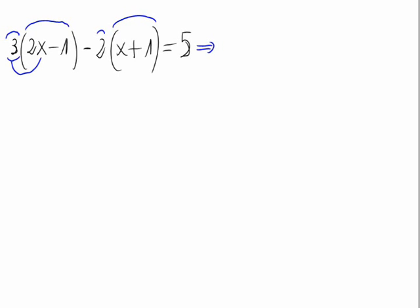Let's go with the first number, the 3. It would be 3 times 2x and 3 times minus 1, and that's 6x minus 3.